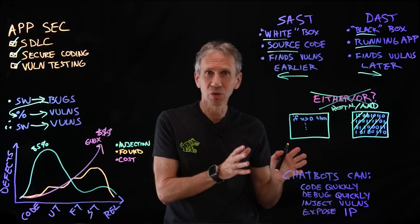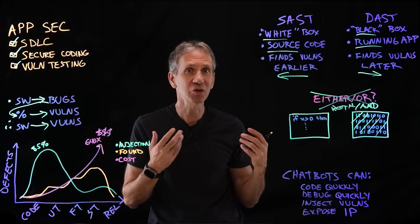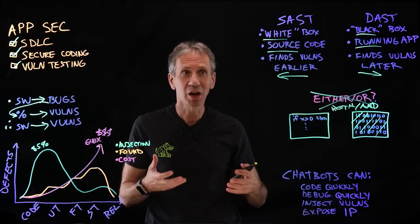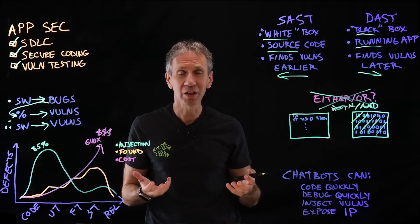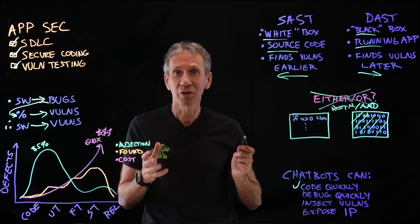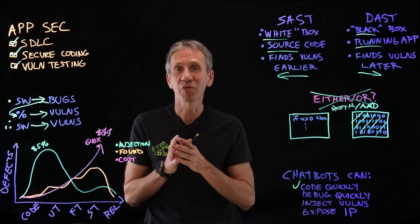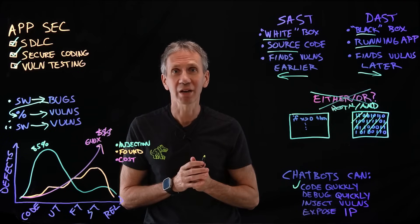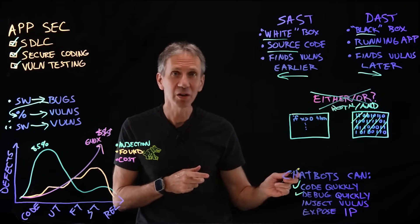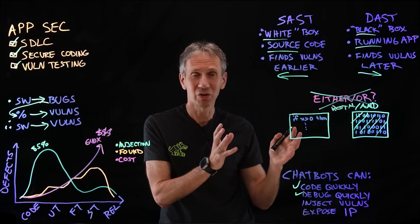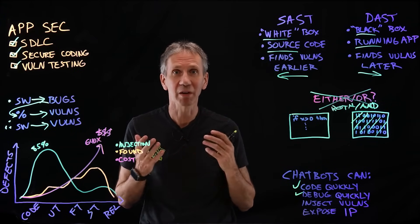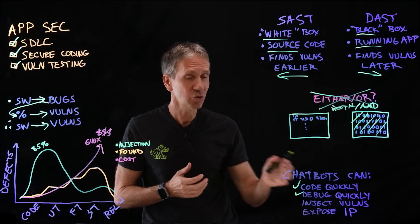One other tool being used a lot in application development — it wasn't initially thought of in that context, but it's really becoming popular — and that is chatbots. These large language models with generative capabilities can also generate code. A chatbot is good at generating code very quickly. You could say, 'Write me a routine in Python that will find all the ways to make change for a dollar,' and it'll spit it right out. They can also debug code — if I'm stuck during the development of some routine, I could send it into a chatbot and maybe it will find what the bug is that I'm trying to deal with.